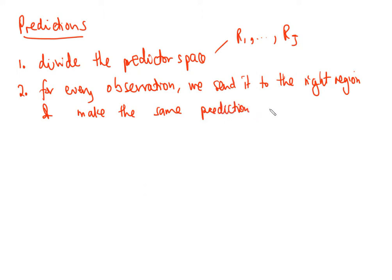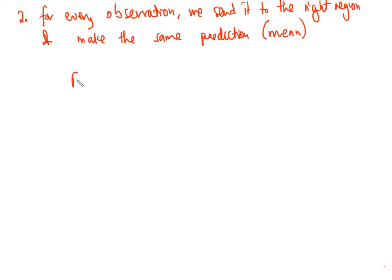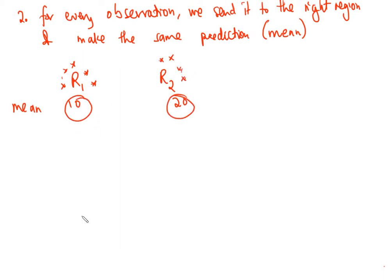Since we're doing regression trees, the prediction will be the mean of that region. So if in step one we get two regions R1 and R2, and the mean for R1 is 10 and the mean for R2 is 20, then every observation falling in R1 gets a prediction of 10, and every observation in R2 gets a prediction of 20.